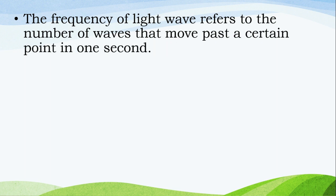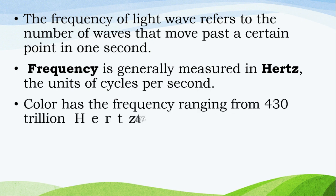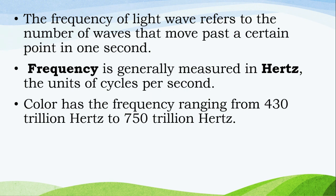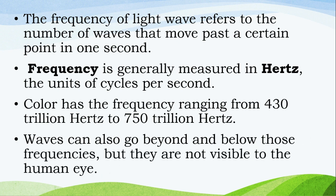The frequency of light waves refers to the number of waves that move past a certain point in one second. Frequency is generally measured in hertz, the units of cycles per second. Colors have frequencies ranging from 430 trillion hertz to 750 trillion hertz. Waves can also go beyond and below these frequencies, but they are not visible to the human eye.